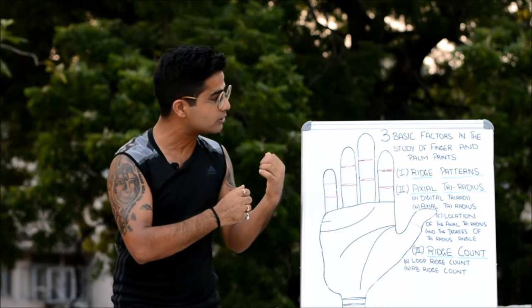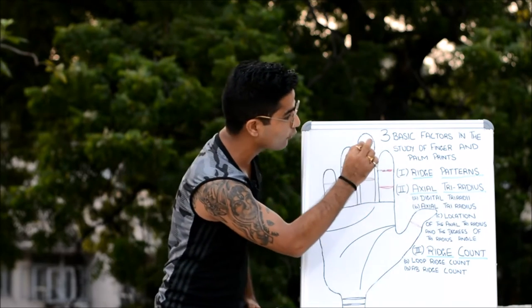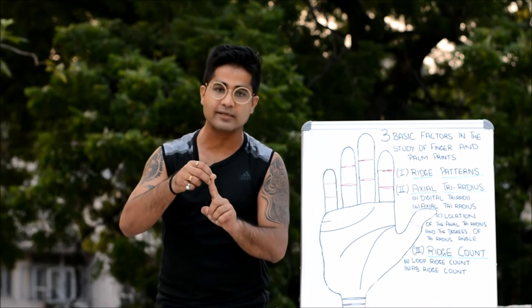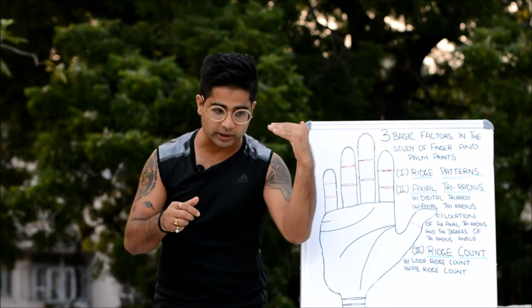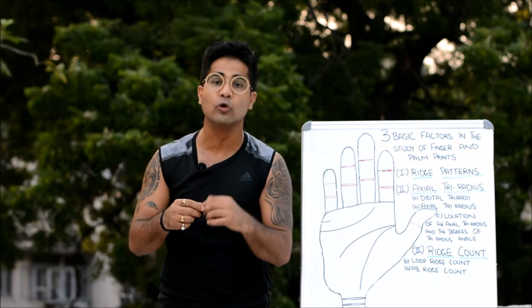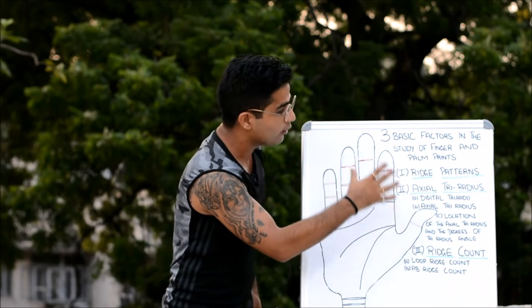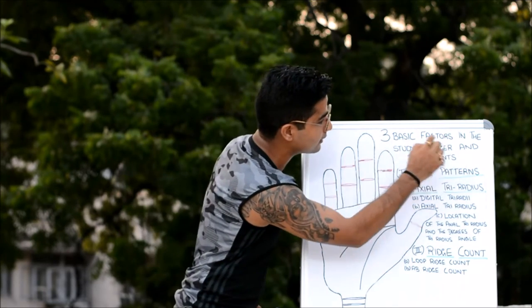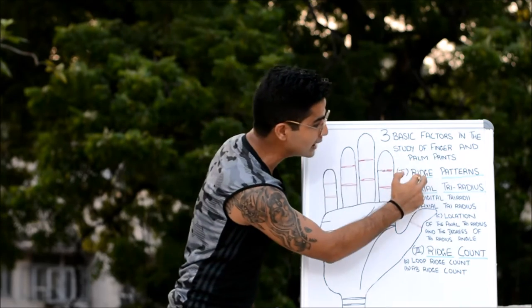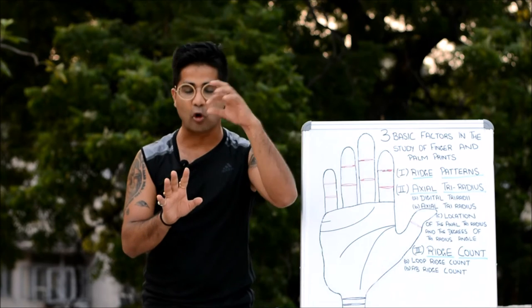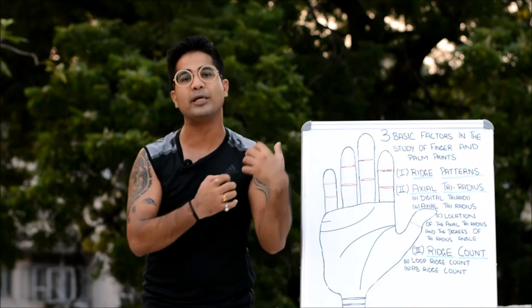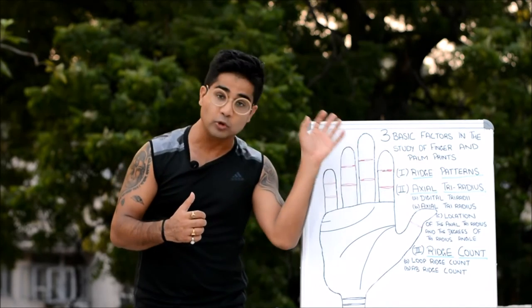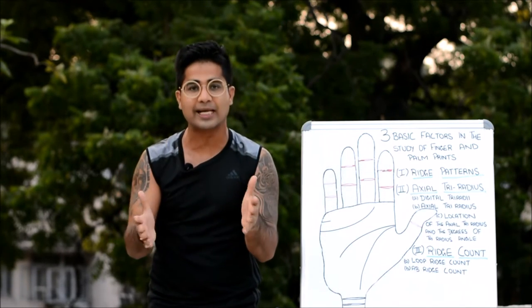When it comes to the three basic factors in the study of finger and palm prints: in the first video we discussed the introductory part, then we took fingerprints one by one and discussed them in detail. The very first was the loop fingerprint pattern. In this video I have consolidated the whole study of fingerprints as well as palm prints. The first basic factor is ridge patterns. The loop pattern — loop people remain very adaptable, versatile, and flexible with their emotional and physical needs.